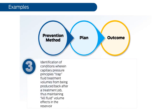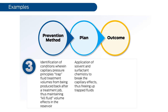A third example might be to address conditions wherein capillary pressure principles trap fluid treatment volumes from being produced back after a treatment job, thus maintaining kill-fluid volume effects in the reservoir. A properly identified problem set might be resolved with the application of solvent and surfactant chemistry to break the capillary effects, thus freeing up trapped fluids, resulting in increased production from a treated well.